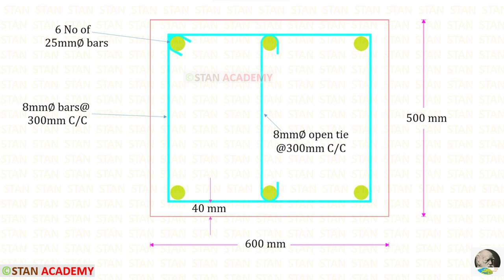Here you can see the cross section with the reinforcement details. Let us keep the clear cover as 40 mm. For the two corner bars we can provide open ties. Now we are going to end this session. Thank you for watching this video.